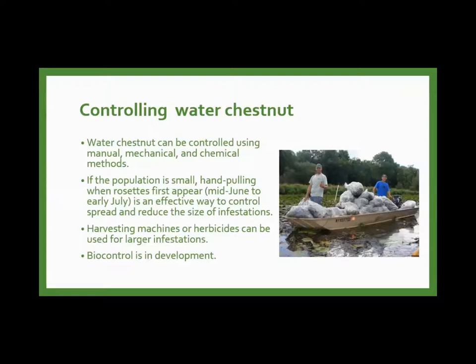Water chestnut, when found in small populations, can be controlled very easily using hand-pulling, mechanical, or chemical methods. Once it becomes a large, robust population it's really challenging to control — that's why we want you to find smaller populations early. We encourage you to report all findings. When small, it can actually be pulled effectively. Larger populations may require harvesting machines or herbicides. Encouragingly, there is a biocontrol in development — so stay tuned.